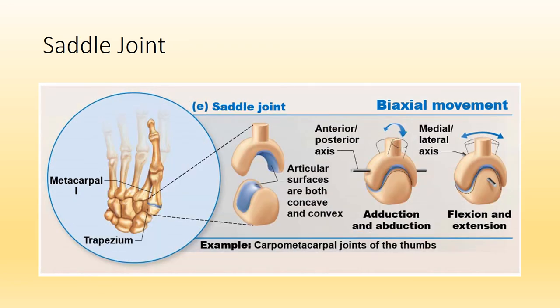There is one saddle joint in the human body. It is found at the thumb and occurs between the trapezium and the first metacarpal. Make sure you know which carpal bone — the trapezium — helps to form the saddle joint of the thumb.